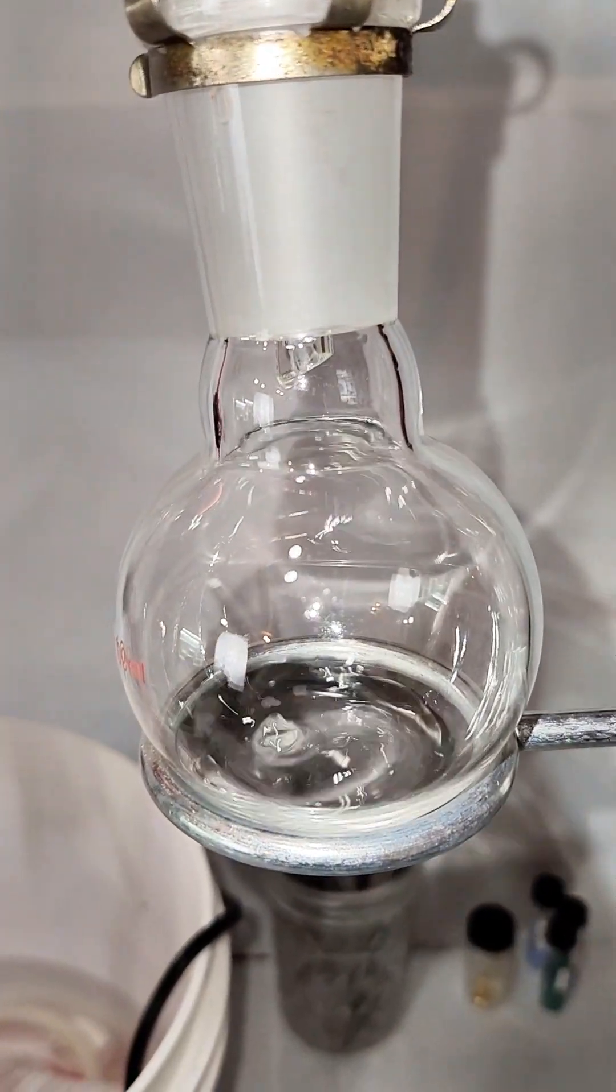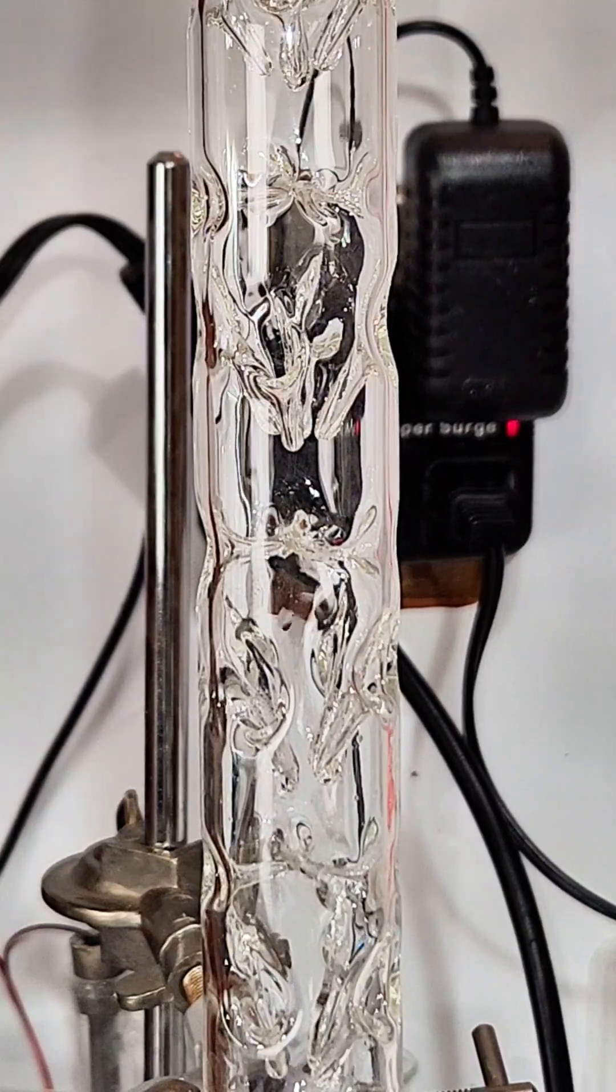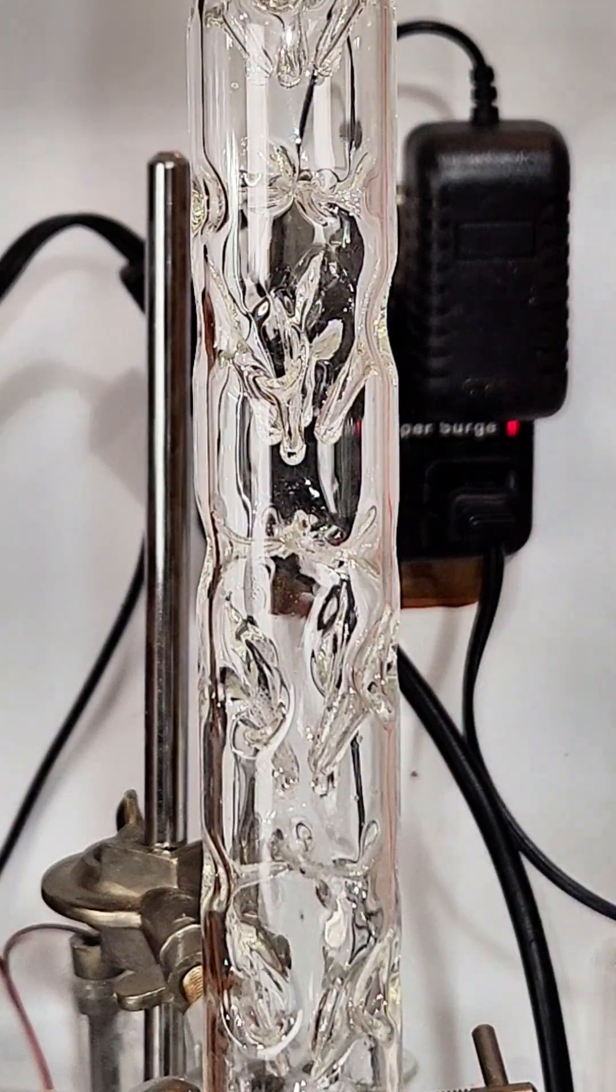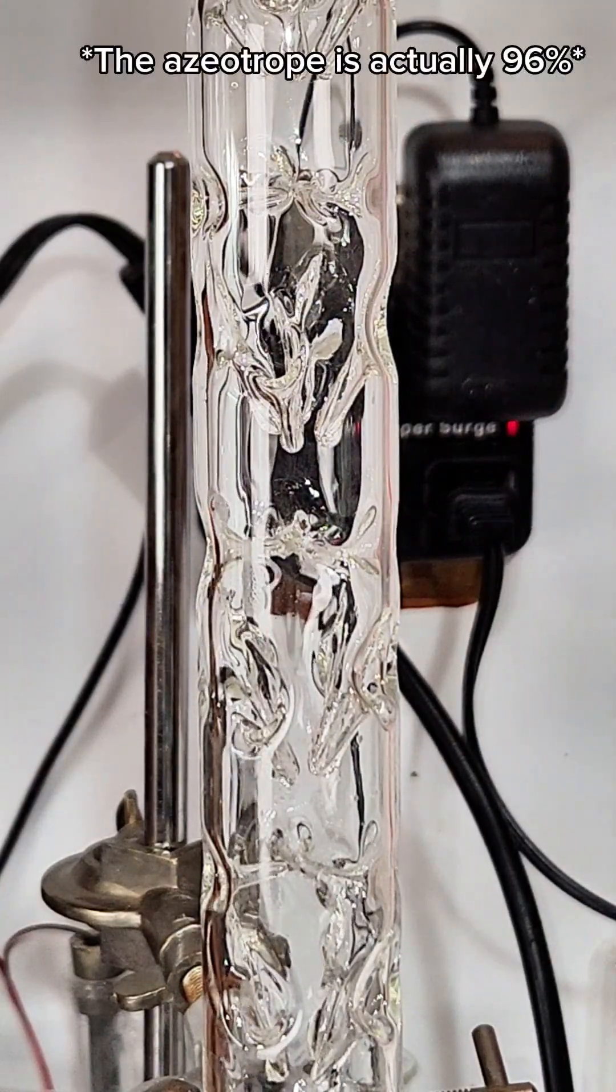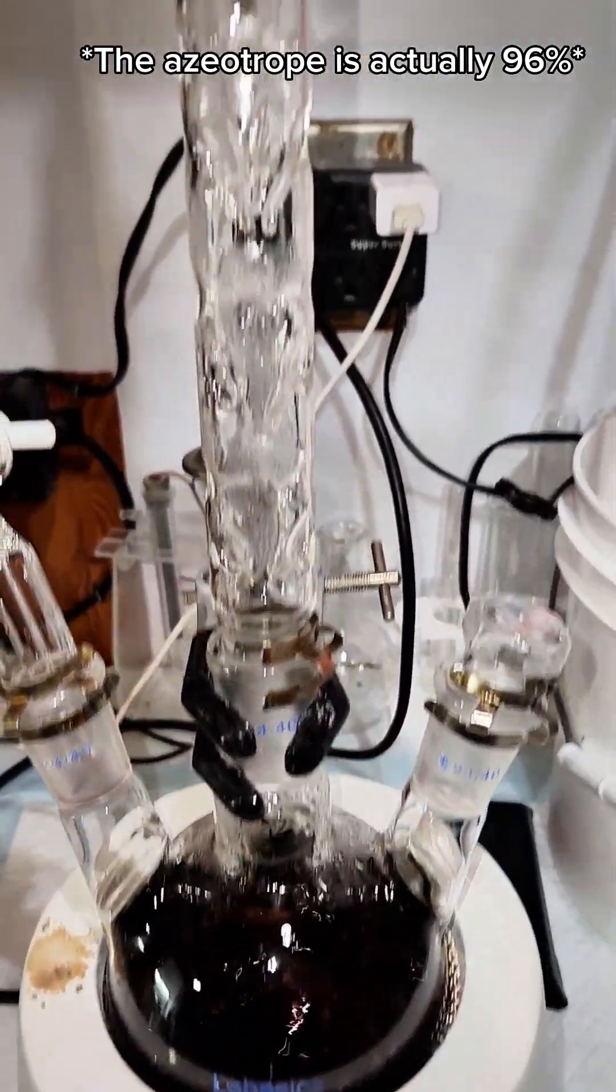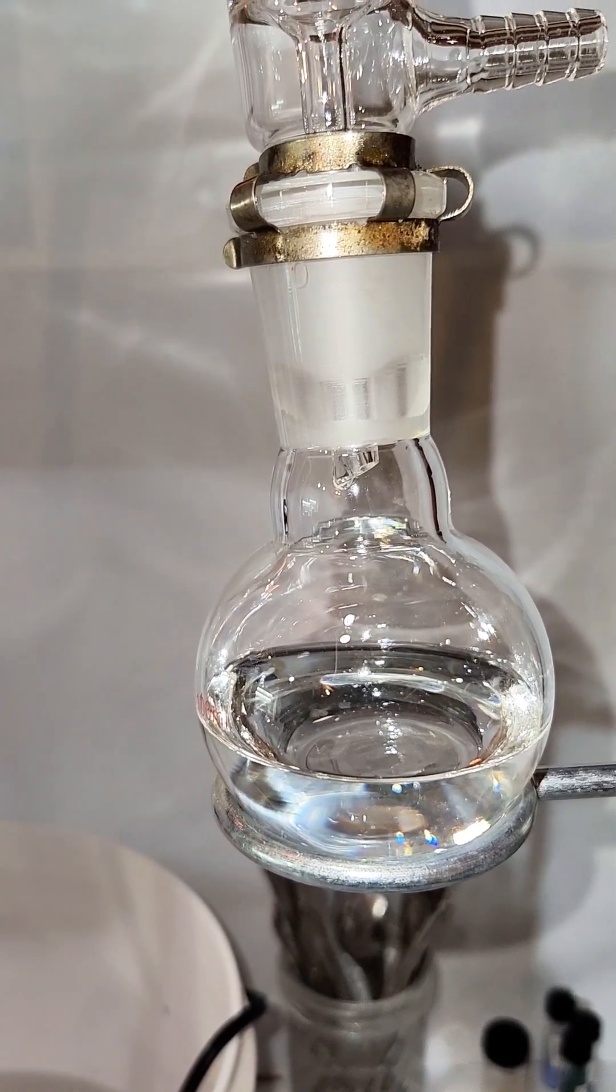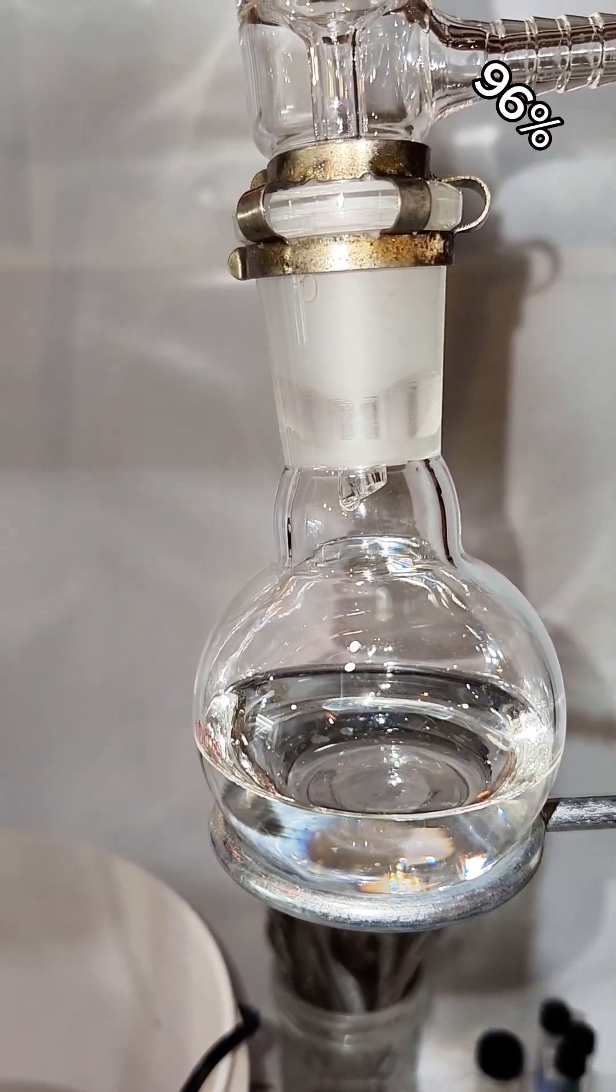If you want to learn more, you can leave a comment and I'll try to do a whole video on it. The point here is that due to my fractional column, my ethanol distillate is going to be about 98% azeotropic. Because of this 98% azeotrope, there's actually no way to get ethanol that's purer than 98% by using distillation.